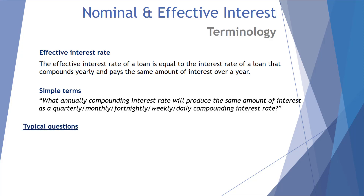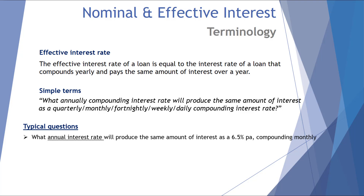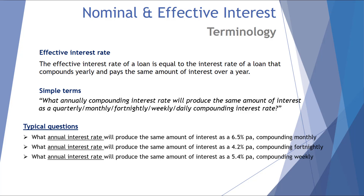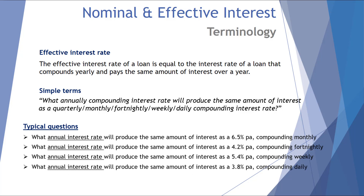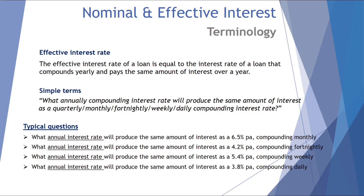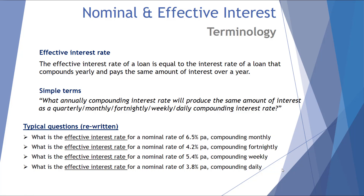Typical questions include: what annual interest rate will produce the same amount of interest as 6.5% per annum compounded monthly? Or 4.2% compounded fortnightly? Or 5.4% compounded weekly? Or 3.8% compounded daily? Sometimes they're written as: what is the effective interest rate for a nominal rate of 6.5% per annum compounded monthly? We want the annual interest rate equivalent — that's the effective interest rate.